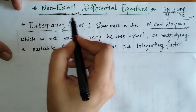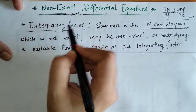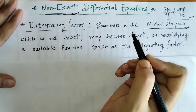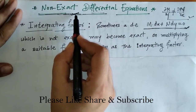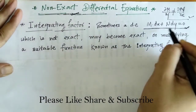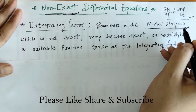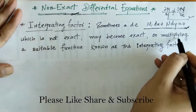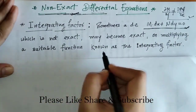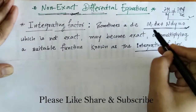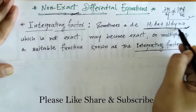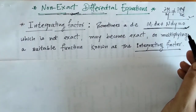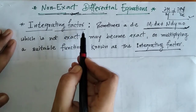In this case, if we have to find the solution, we first have to reduce that differential equation to an exact differential equation and then we can find its solution. Here we are going to discuss how to find the solution of a non-exact differential equation. When we have a non-exact differential equation, this equation becomes exact on multiplying by some suitable function, and that function is known as the integrating factor. There are some rules for finding the integrating factor.